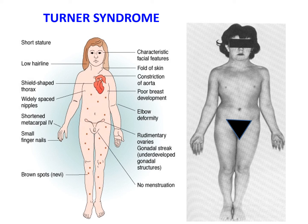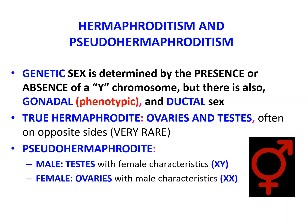Shown here are the typical characteristics of Turner syndrome. Regarding hermaphroditism and pseudo-hermaphroditism: genetic sex is determined by the presence or absence of a Y chromosome, but there is also gonadal, phenotypic, and ductal sex. True hermaphroditism is when ovaries and testes, often on opposite sides, are present — it is very rare. A pseudo-hermaphrodite male has testes with female characteristics and is XY, while a pseudo-hermaphrodite female has ovaries with male characteristics and is XX.